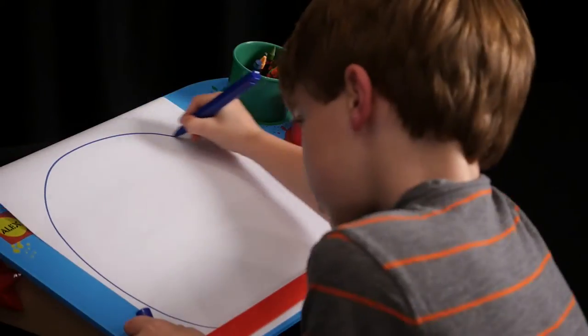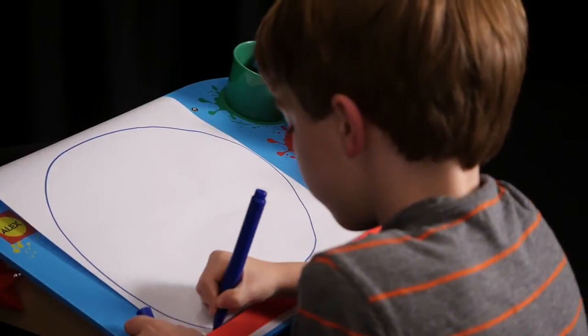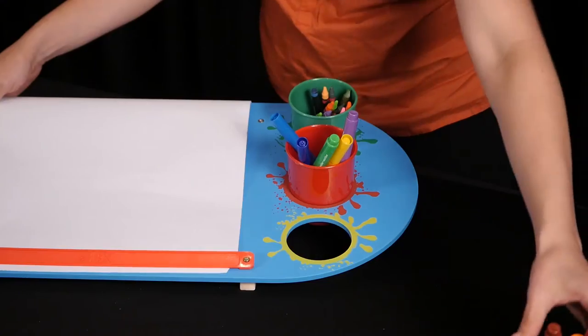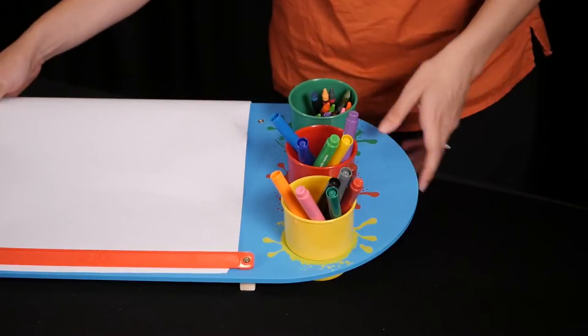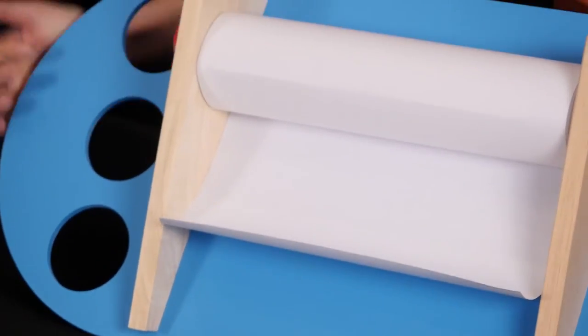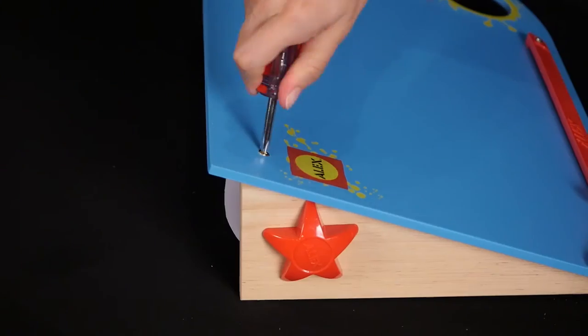This sturdy wooden drawing station is more than just a drawing desk. The station includes three large storage cups for art supplies, a 12-inch by 100-foot paper roll, a paper cutter, and a tool for assembly.